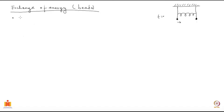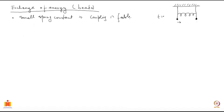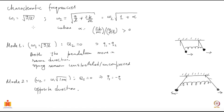The first point is that the spring constant is small, which ensures that the coupling between the two pendulums is also very feeble, which amounts to saying that alpha is much smaller than 1 — the alpha defined here, which is controlled by k.